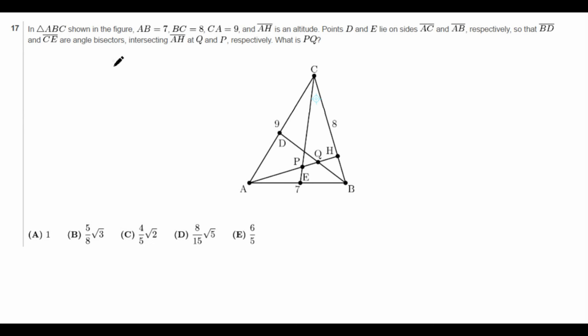In triangle ABC shown in the figure, AB equals 7, BC equals 8, CA equals 9, and AH is an altitude. Points D and E are on sides AC and AB respectively, so that BD and CE are angle bisectors and they intersect AH at Q and P respectively. We want to find PQ.